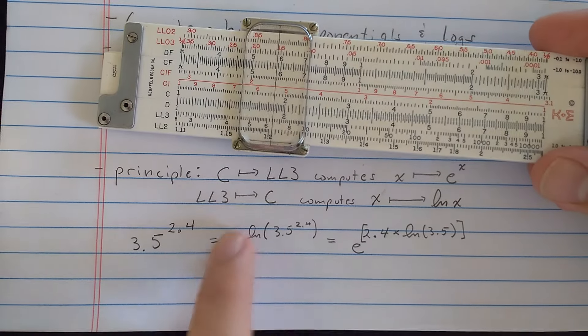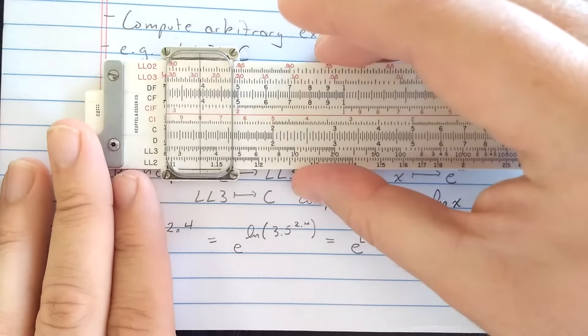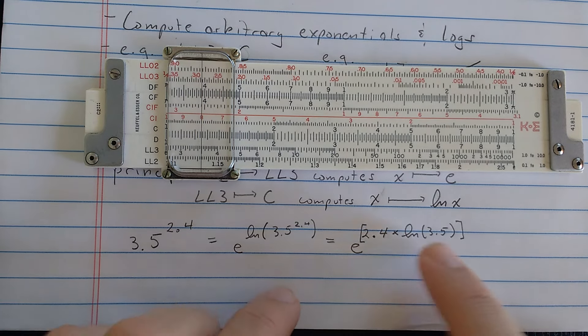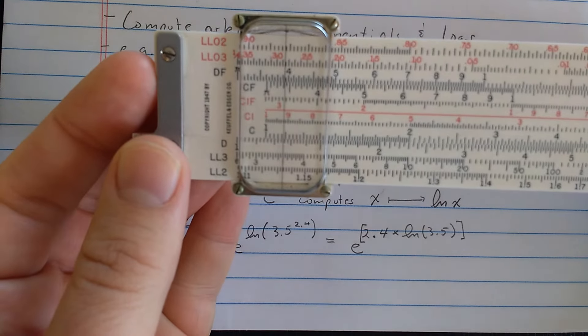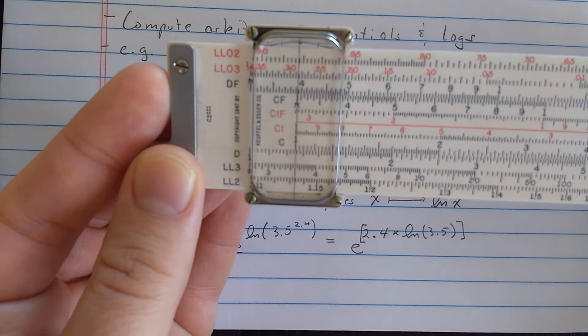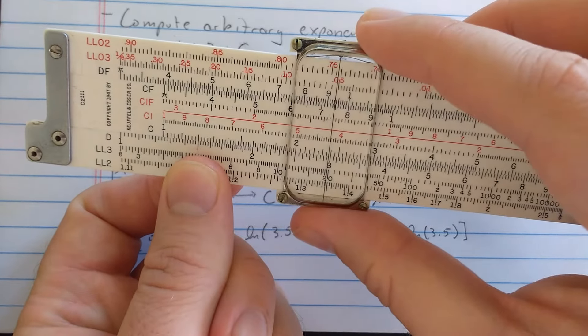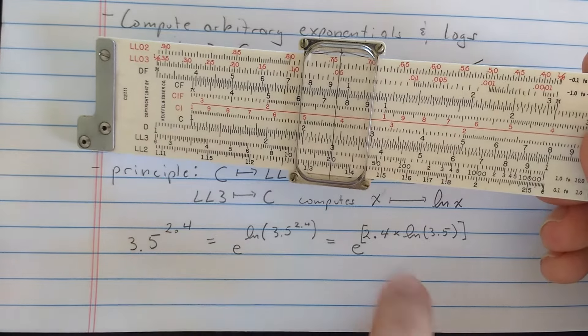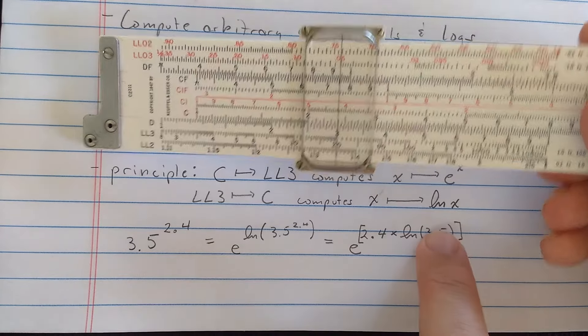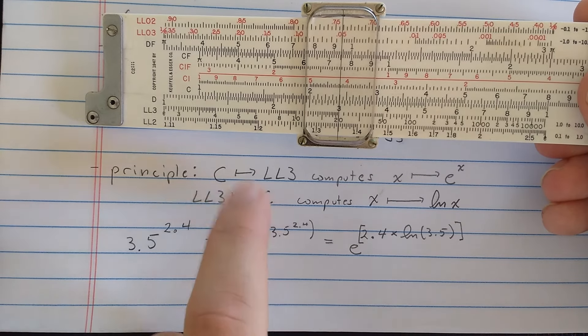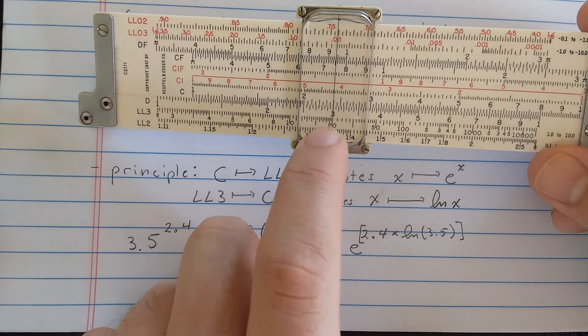Here's the 3.5. Then I should multiply by 2.4. So natural log of 3.5 is appearing on the D scale now. So to multiply by 2.4, I use our original multiplication method of aligning the 1 with that natural log of 3.5 on the D scale, and then moving out to the 2.4. So what that does is that computes 2.4 times natural log of 3.5, and the result is on the D scale. Now, that result in brackets here is on the D scale, so I need to take the exponential. So I should read D to log-log-3. So reading D to log-log-3, I read the result as about 20.